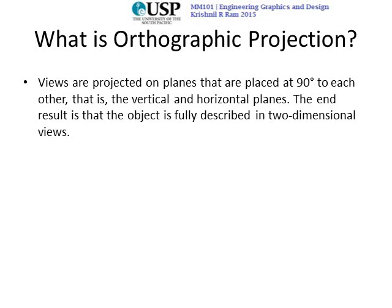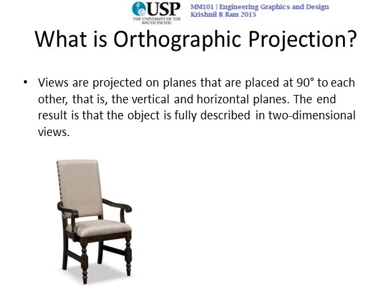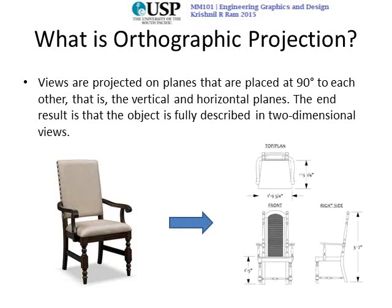Orthographic projections are views projected on planes placed at 90 degrees to each other — that is, the vertical and the horizontal plane. The end result is that the object is fully described in two-dimensional views. For example, if you have a chair modeled as a three-dimensional view and want it manufactured, you would transfer it into a set of three views which fully describe the object.